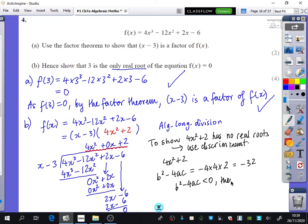So because b squared minus 4ac is less than 0, there are, how many roots? No real roots. There are no real roots. Hence, 3 is the only real root of f of x.